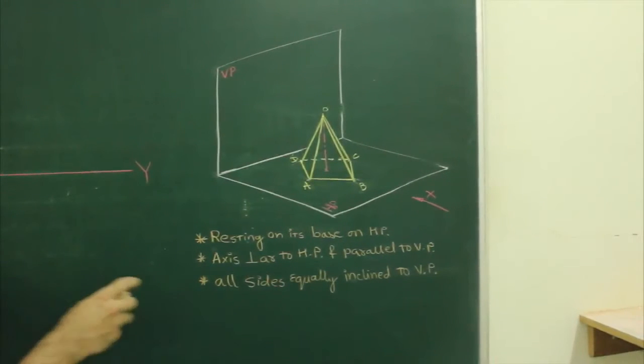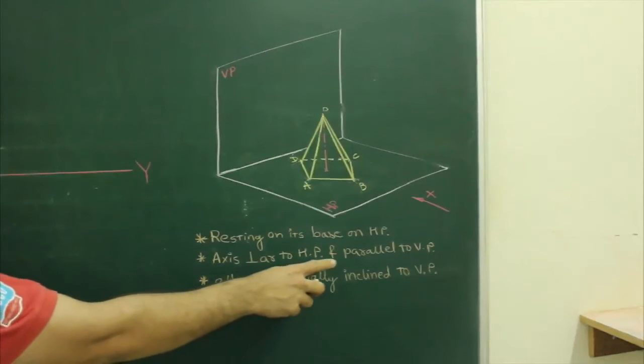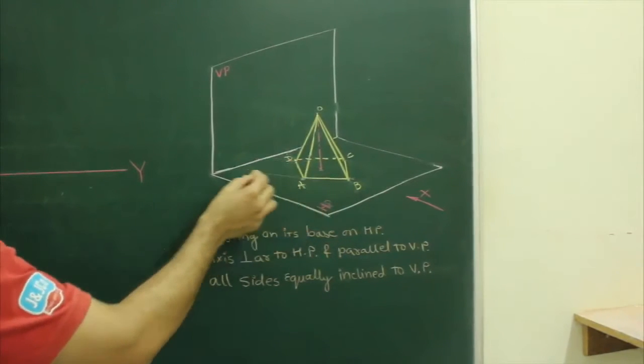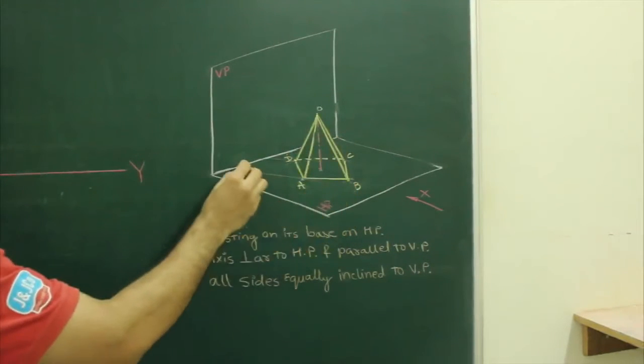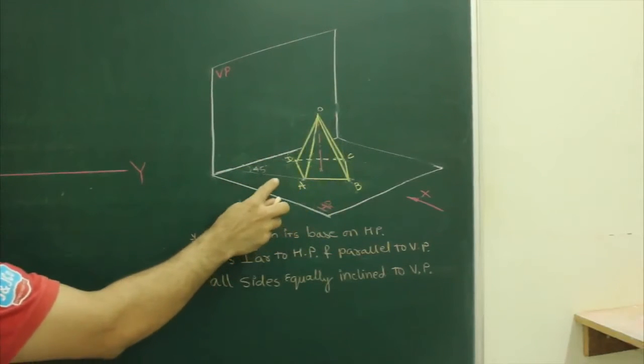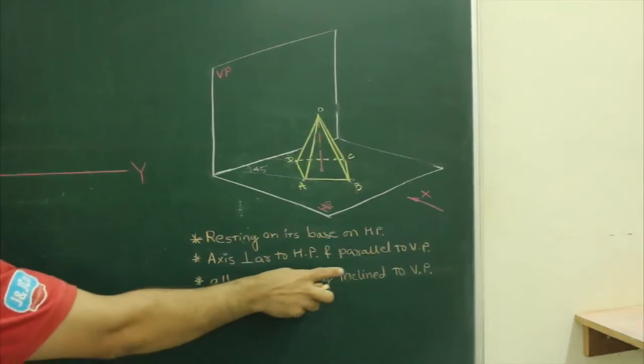And if you see that when all sides are equally inclined to HP, so if you see side AD, side CD, AB, we see all are inclined at 45 degrees to HP. In case of a square, it will be 45. So all sides are inclined to HP.